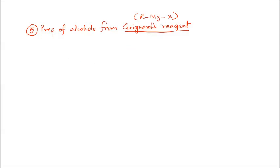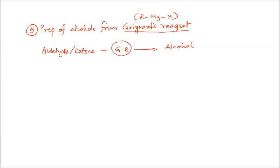When we take an aldehyde or a ketone and use a Grignard's reagent, this combination will make alcohol. Alcohol can be prepared by combining a Grignard's reagent with an aldehyde or ketone. Let us understand the mechanism first — please listen and understand before writing. Then we will solve many examples.